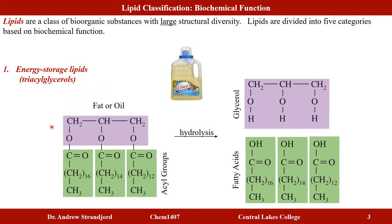Here is an example of a triacylglycerol. Notice there are four highlighted areas: the top part in purple is the glycerol portion, and the green parts are the acyl groups with ester linkages — a carbonyl group and an OR group. Under hydrolysis conditions (heat, water, and a catalyst or enzyme), we break those ester linkages to form glycerol, a three-carbon alcohol with three hydroxyl groups, and three fatty acids.